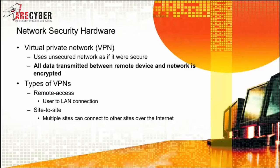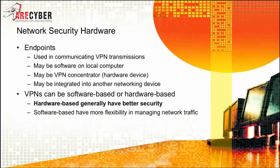Next, we have VPNs, or Virtual Private Networks. They use unsecured networks as if they were secure — all data transmitted between remote devices and the network is encrypted. Two basic types are remote access VPNs and site-to-site VPNs. A remote access VPN goes from a user's computer across the internet to your primary internal LAN, while a site-to-site VPN connects multiple sites across the internet. VPN endpoints handle the communications and may be software on a local computer or a VPN hardware device. Hardware-based VPNs generally have better security, while software-based are more flexible in managing overall network traffic.